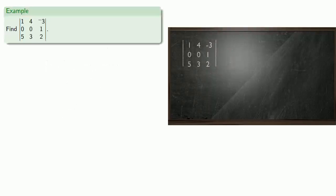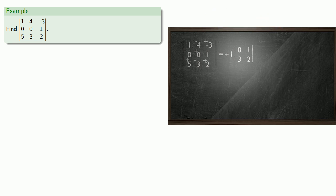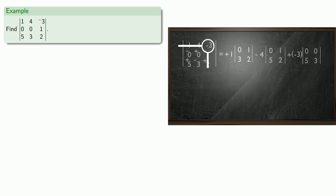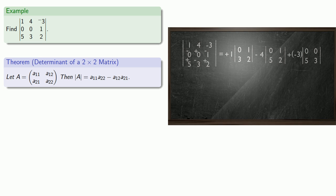For a 3 by 3 matrix, we again set up our grid of plus and minus signs. Starting with the first row, we take the first entry, cross out its row and column to form the minor, and multiply that minor by the entry along with its sign. We do the same for the second and third entries — cross out row and column to form each minor, then multiply the minor by the signed entry. Since all our minors are 2 by 2 determinants, we find their value by multiplying along one diagonal and subtracting the product along the other diagonal.